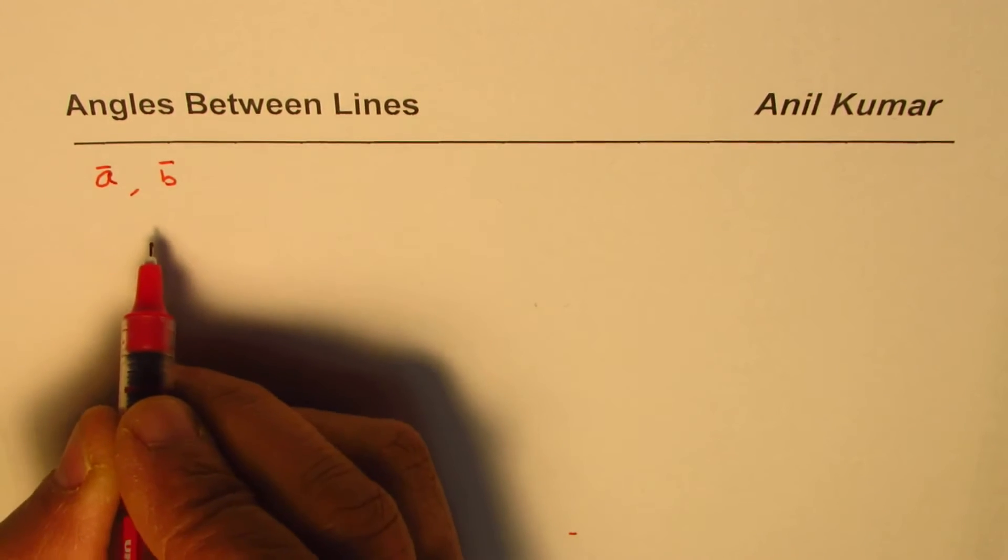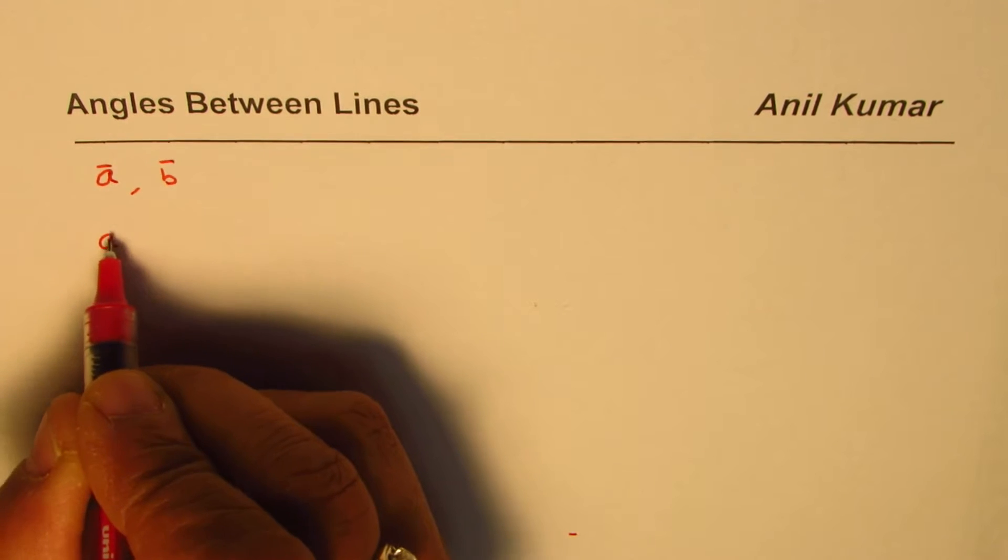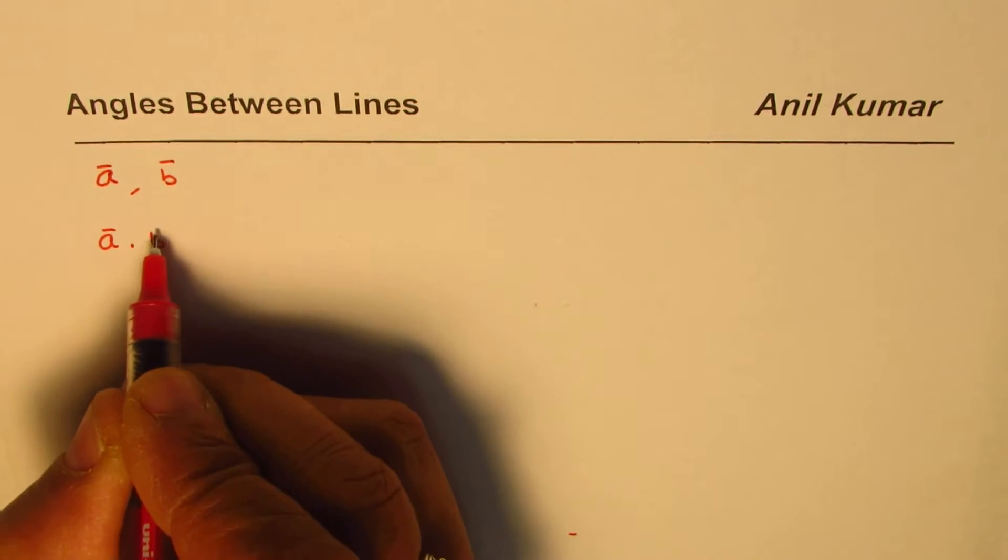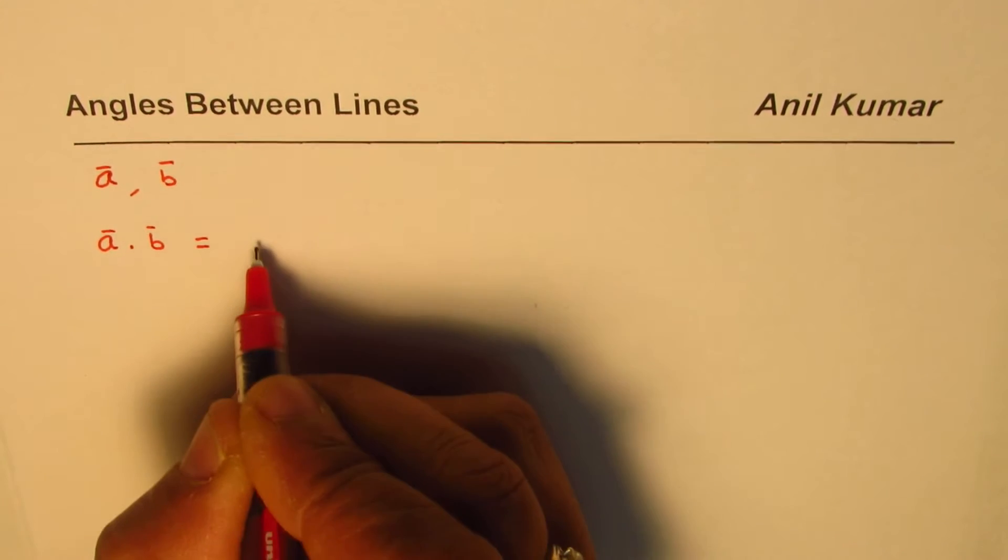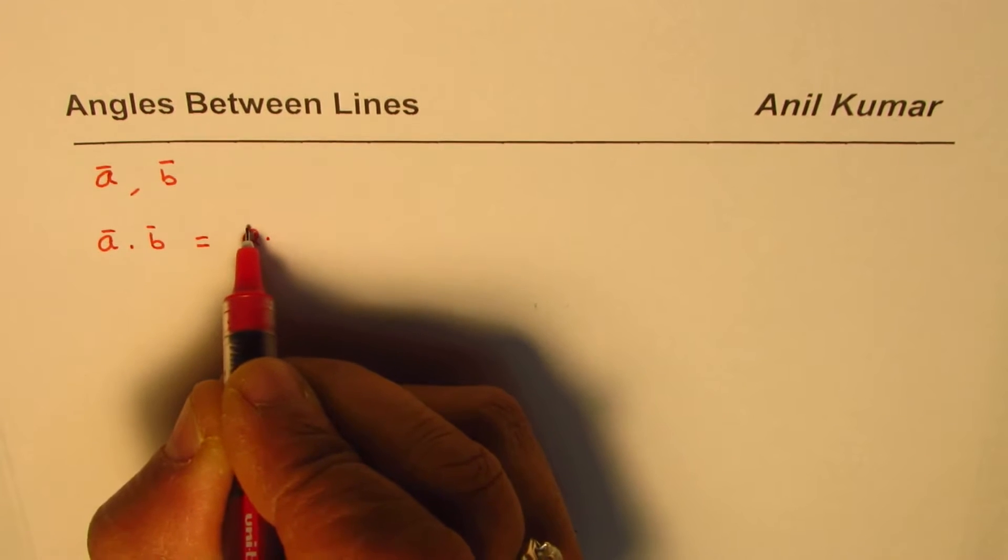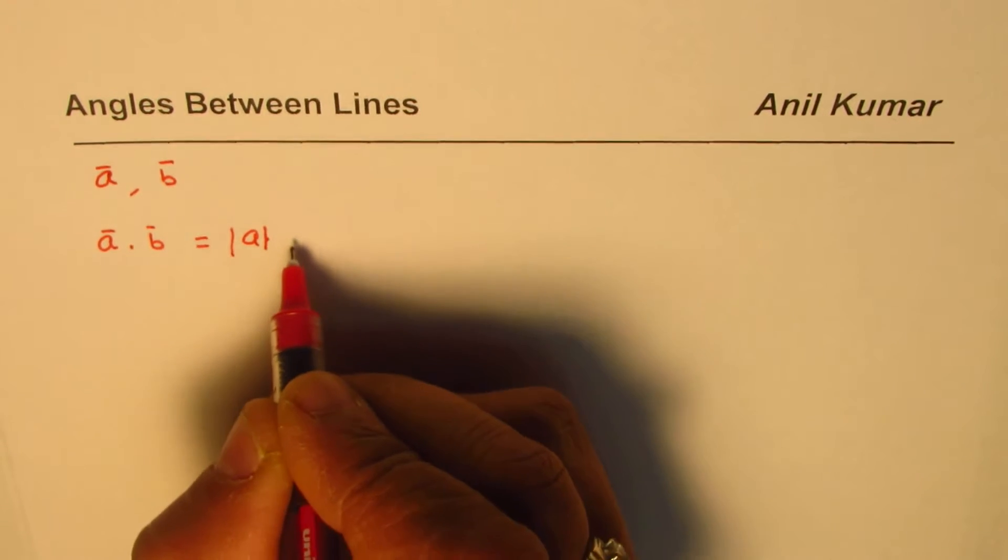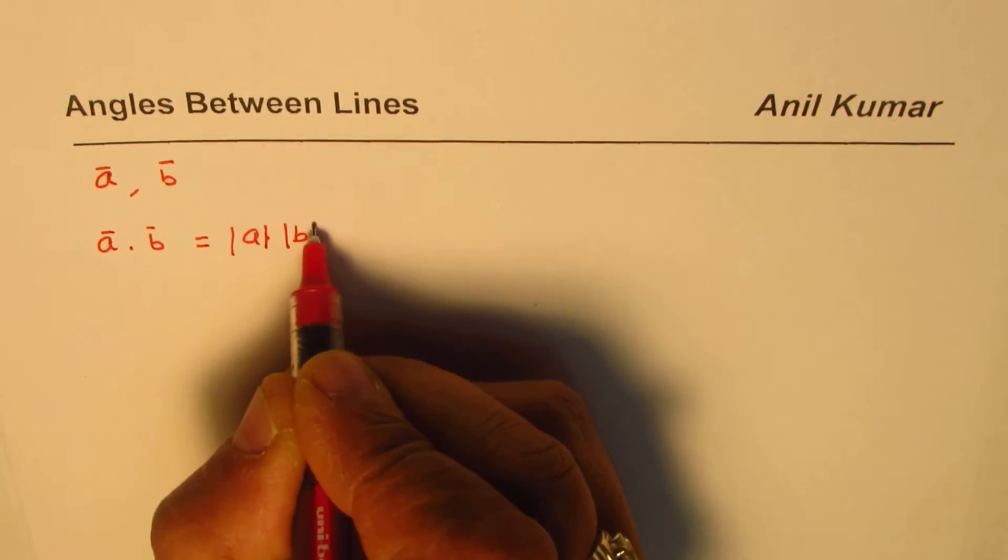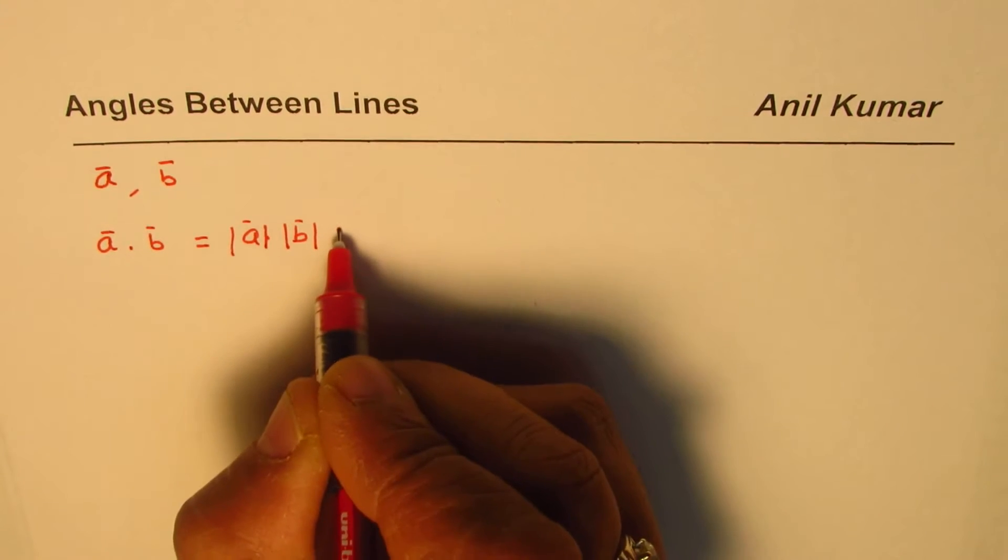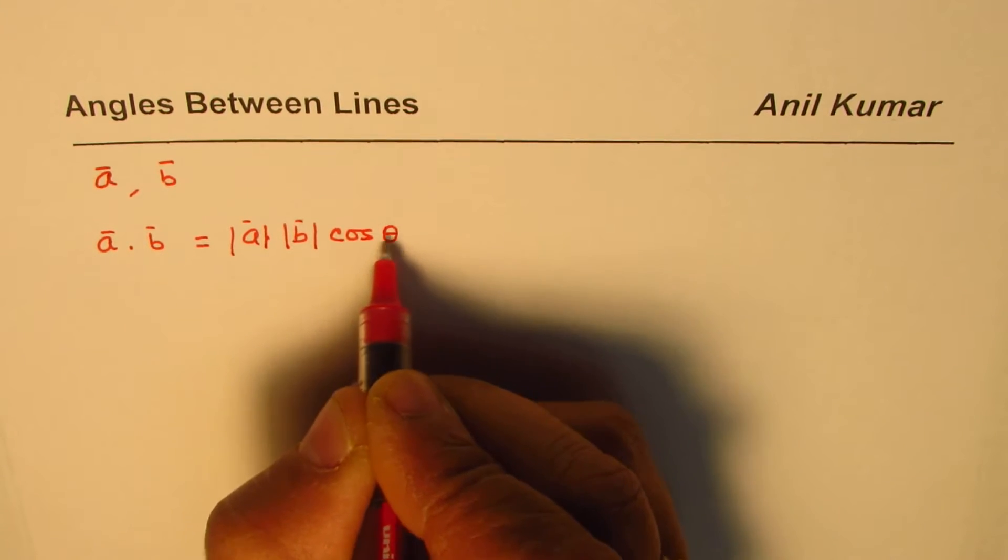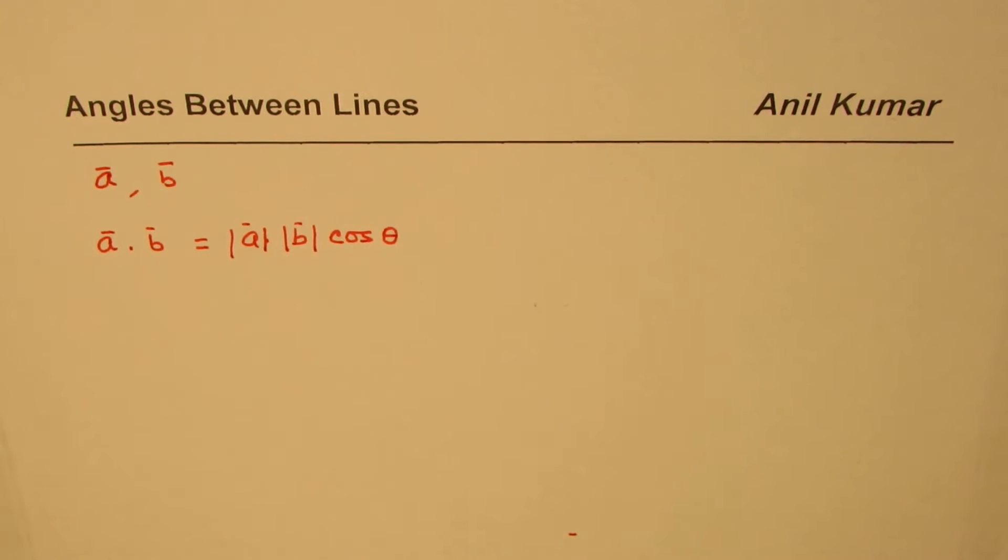What is the dot product of a and b? The dot product of a and b equals the magnitude of a times the magnitude of b times cosine theta, where theta is the angle between them.